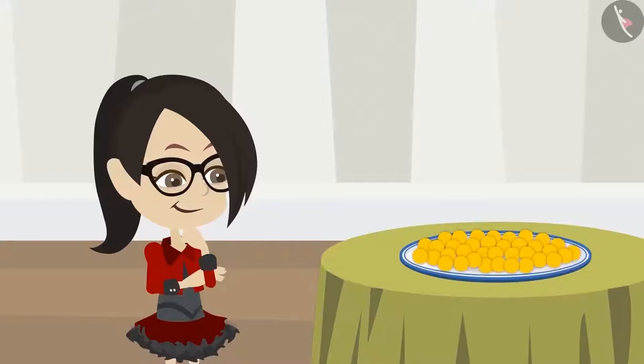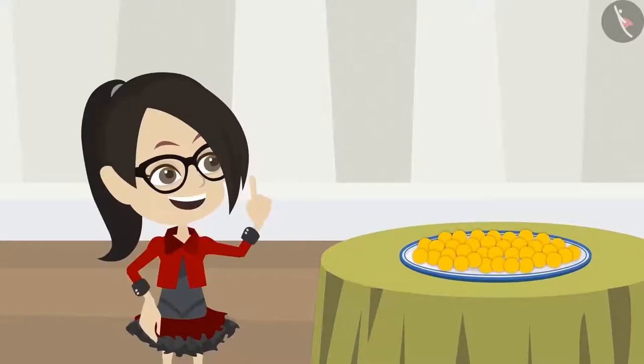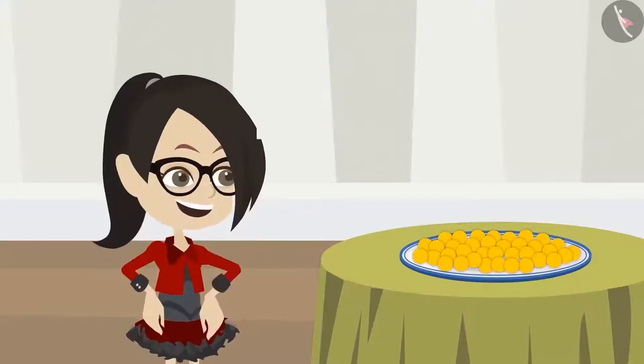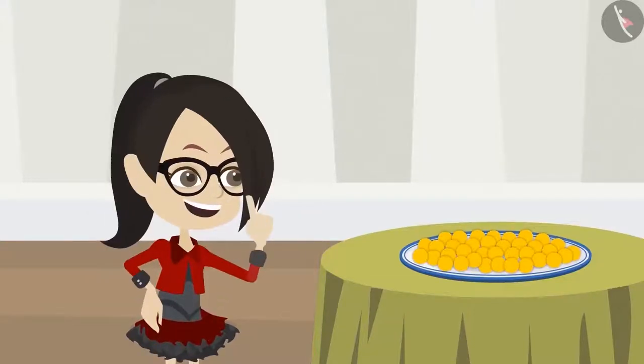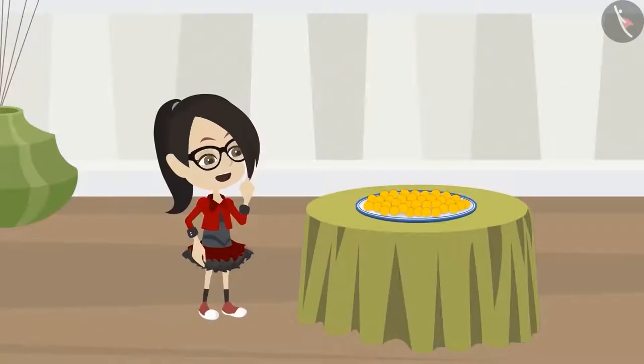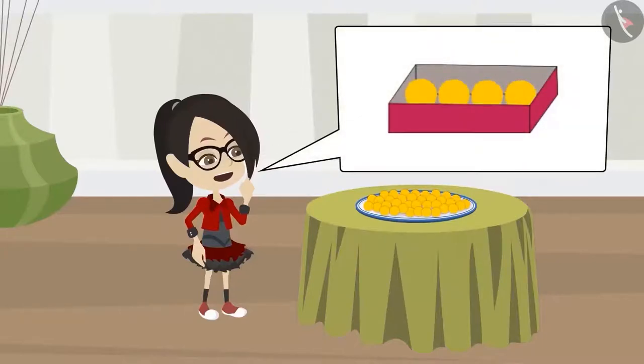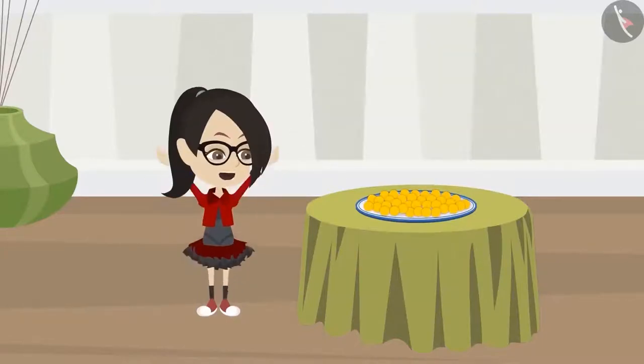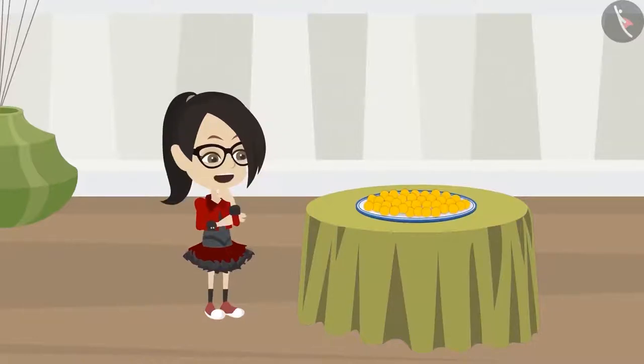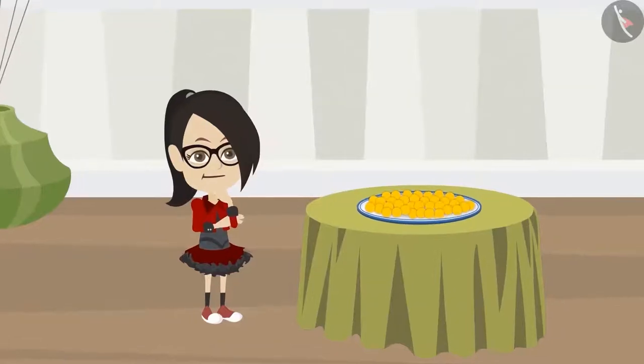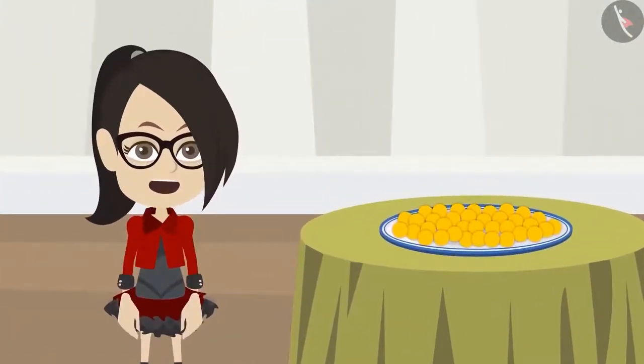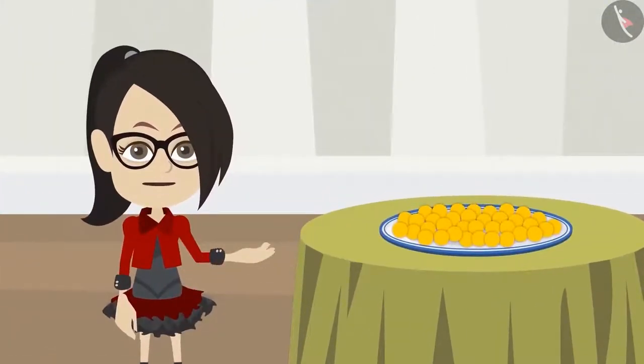Vandana looks at the Ladoos. Vandana has come up with an idea that she can find out in how many boxes these Ladoos will fit. "I know that four Ladoos will come in a box. I'll try to make groups of four Ladoos. The more groups I make, the more boxes I have to bring from the market. You two help me divide the Ladoos into groups, okay?"